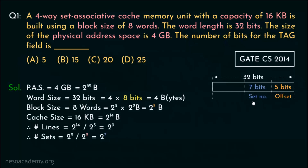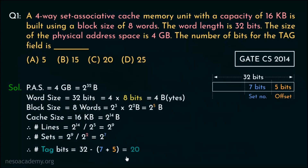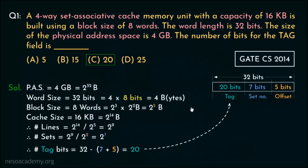That means 7 bits are used for the set number. The number of tag bits is found by subtracting the set number and offset bits from the physical address bits. So 7 plus 5 is 12, and 32 minus 12 gives us 20. Therefore 20 bits will be used for tags, making option C the correct one. However, I have to break the sad news — the entire derivation process in this case is wrong, and the physical address bit split is also wrong.